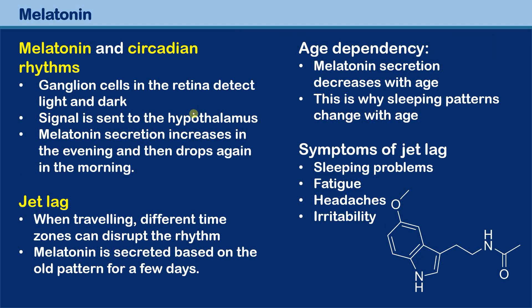Melatonin is associated with circadian rhythms — the daily rhythms that humans have, like the wake-sleep cycle. Receptor cells called ganglion cells in the retina of the eye detect light and darkness, sending a signal to the hypothalamus in the brain. Melatonin secretion increases in the evening and drops again in the morning, creating daily cycles that influence our daily rhythms.